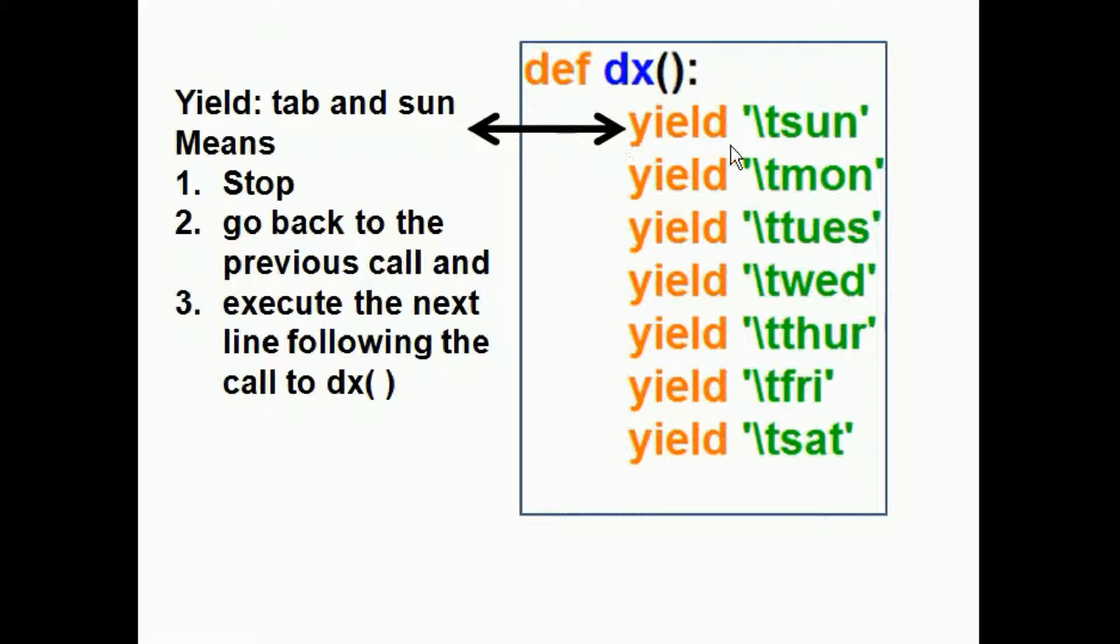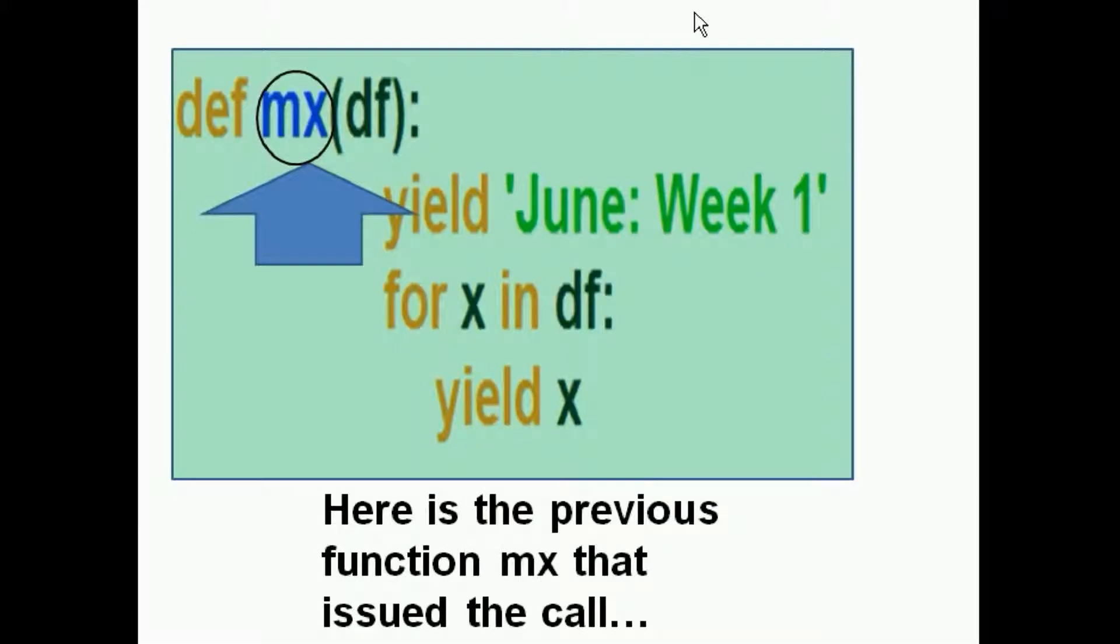The DX generator function, all yields, of course. And it's going to yield a tab and the name of the day of the week. Tab Monday, tab Tuesday, tab Wednesday. Right now we're on tab Sunday. A yield, and then whatever data follows it, means stop, go back to the previous call, and execute the next line following the call to this DX generator function. Okay, so he grabs the tab and Sunday and goes back.